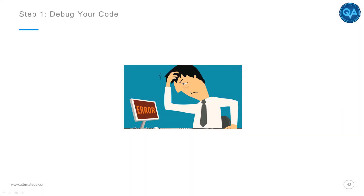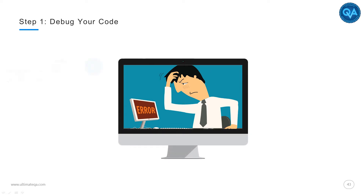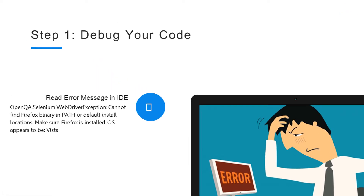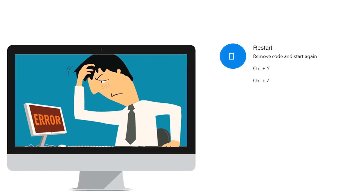Step one is to debug your code — read the error messages in your IDE. IDEs these days are pretty smart and they give you fantastic error messages that you can look at and understand. They even give you a line number and a character number that will point you to the right place where your error occurs. Go to that location and see what the IDE is complaining about — usually there's some kind of squiggly line pointing you to the error. Try to fix it.